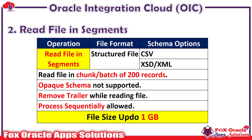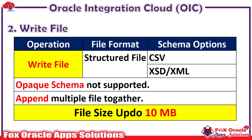The write file operation is used to create or write a file in OIC. For example, if you have request or response payload from an API and want to place that data into a CSV or XML file — perhaps to send as an email attachment — you use the write operation. It also supports an append option, which allows you to merge multiple files together. For instance, you can write a file with 10 lines and then append another file to merge them.